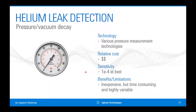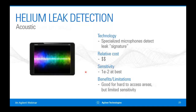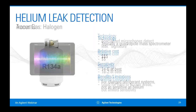Pressure decay: you create a pressure or vacuum and look for that pressure to change over time. It's relatively inexpensive but only goes about another order of magnitude better than soap solutions, and can be time-consuming waiting for that change to occur. Acoustic solutions are good because they can find a leak from some distance away, using specialized microphones to pick up the unique ultrasonic frequency signature of a very small leak — good for pressurized gas lines in large industrial facilities, but sensitivity is extremely limited.